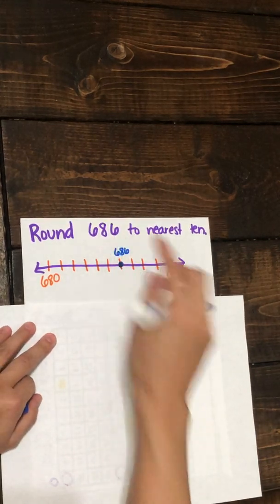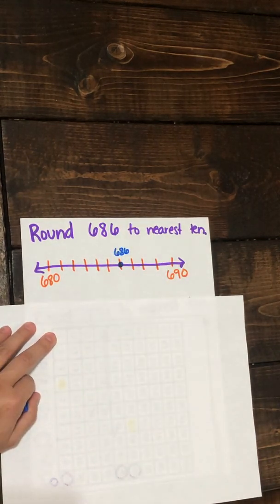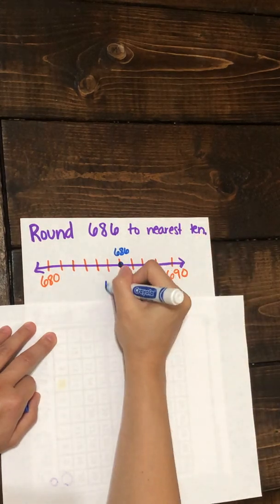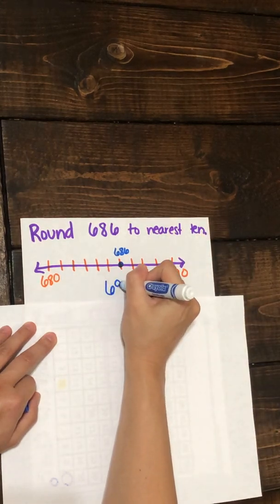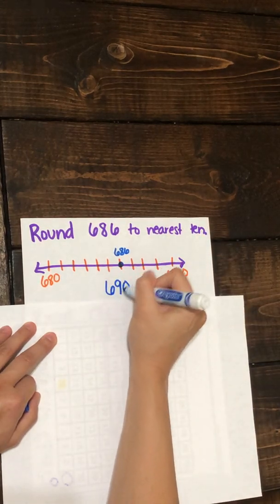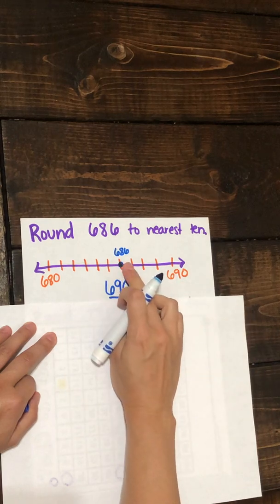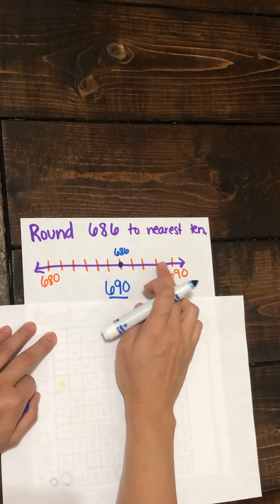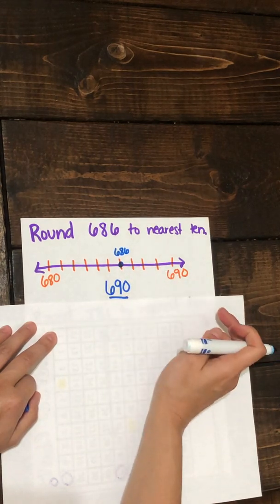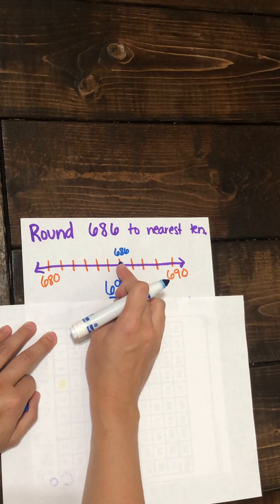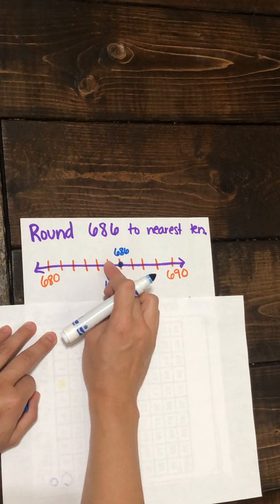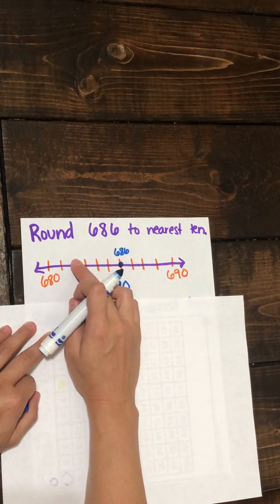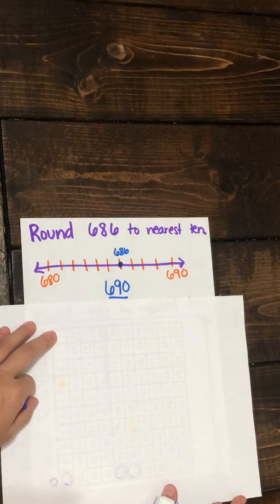So 686 rounded to the nearest ten would be 690, because you can see it is only 4 jumps away from 690, while it would be 6 jumps away from 680.